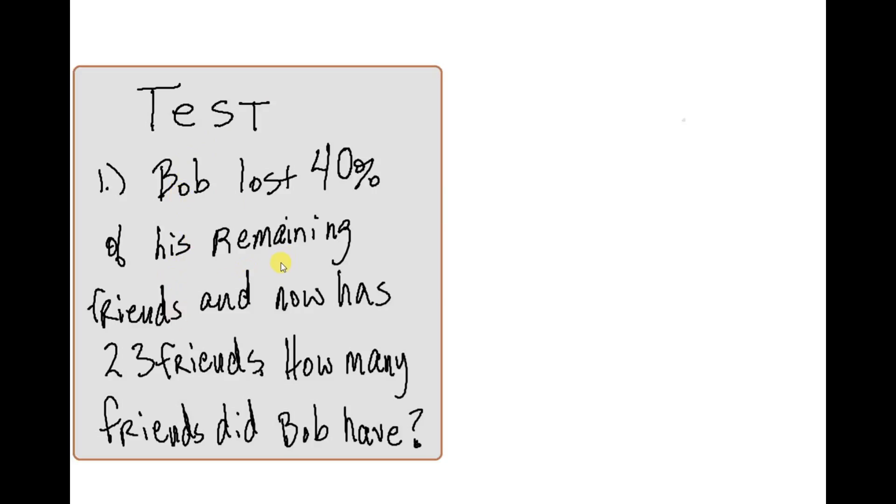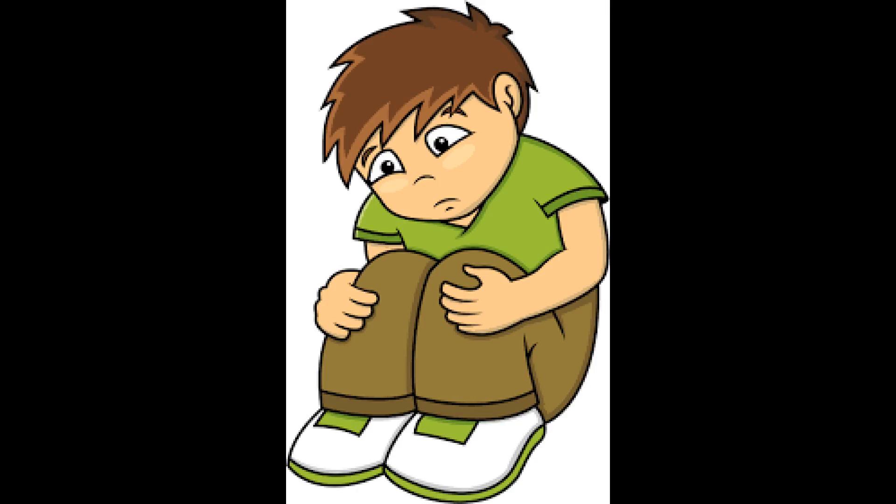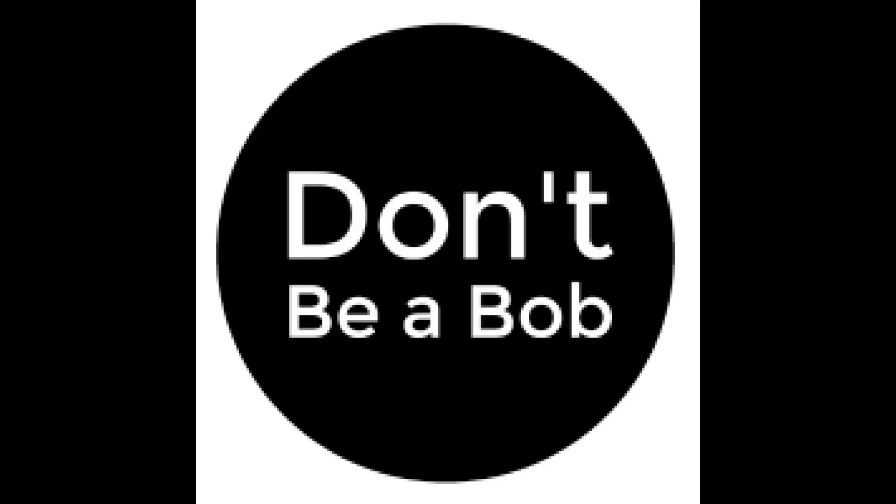Let's take a look at this problem. Bob lost 40% of his remaining friends, and he now has 23. We're being asked to find out how many friends Bob had. I think the question that is begging to be asked here is, what's going on with Bob? He's lost 40% of his remaining friends? Sounds like he's in a downward spiral.